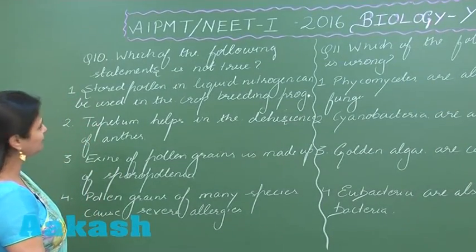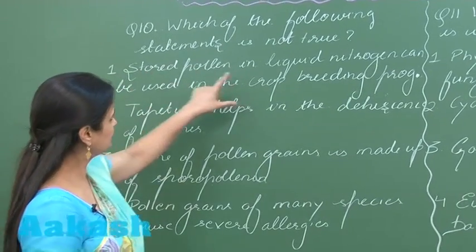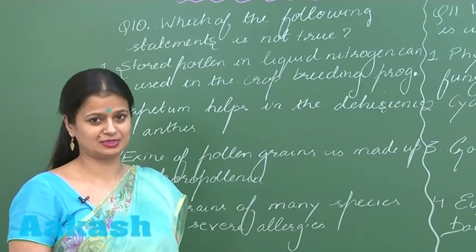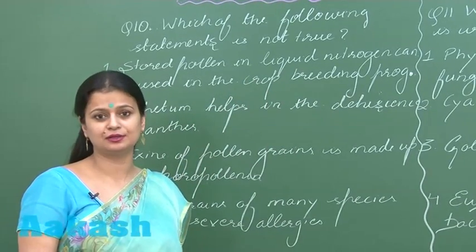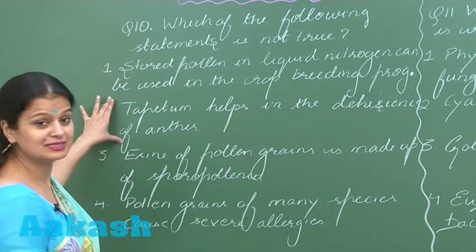Question number 10: we have to look for the incorrect option. Stored pollen grains in liquid nitrogen can be used for crop breeding programs. Yes, the storage is done at ultra-low temperature. Tapetum helps in the dehiscence of anther.